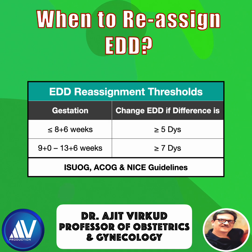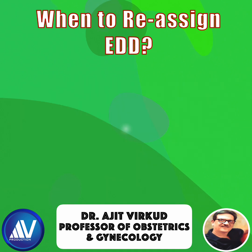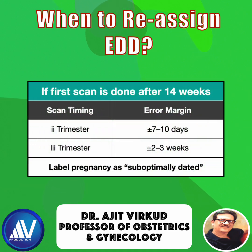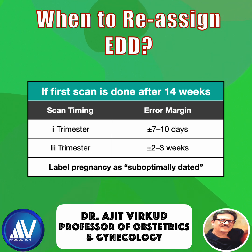Please note, if the first scan is after 14 weeks, accuracy of EDD drops significantly. Error margin increases to plus or minus 7 to 10 days in the second trimester, and plus or minus 2 to 3 weeks in the third trimester. In such cases, use the earliest available scan and label the pregnancy as sub-optimally dated if uncertainty remains.